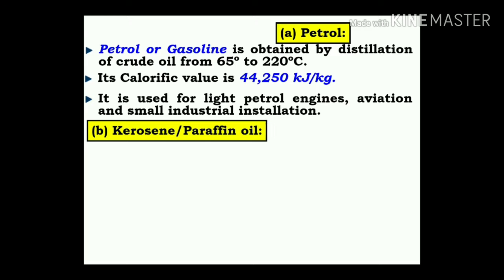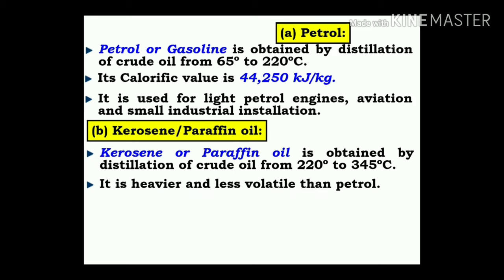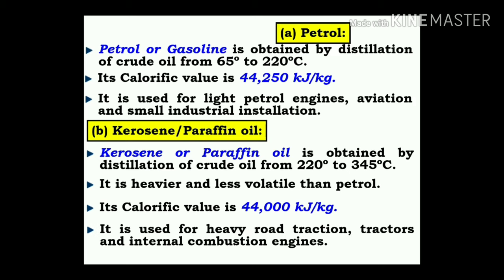Kerosene, or paraffin oil, is obtained by distillation of crude oil from 220°C to 345°C. It is heavier and less volatile than petrol. Its calorific value is around 44,000 kJ/kg. It is used for heavy road traction, tractors, and internal combustion engines.